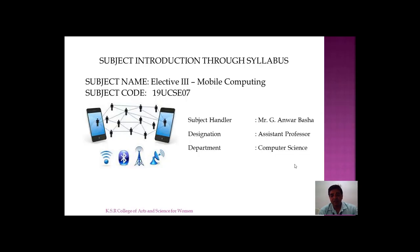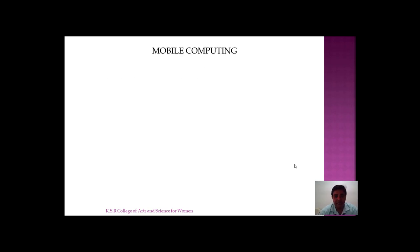Starting with, we learned the subject name as mobile computing and the subject code is 19UCSE07 since it belongs to elective. Mobile computing has the following subcategories wherein we are going to introduce what mobile computing is and the areas which it is applied.